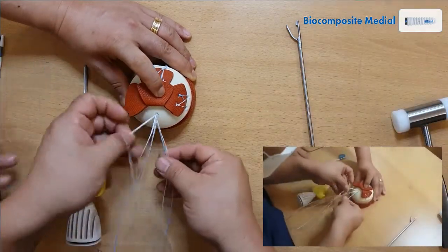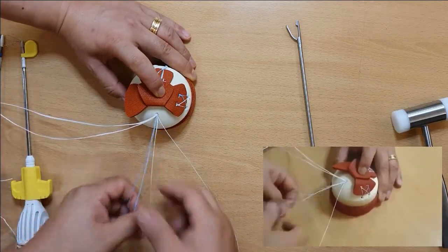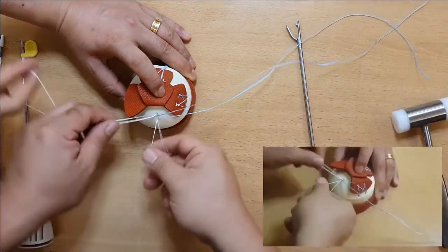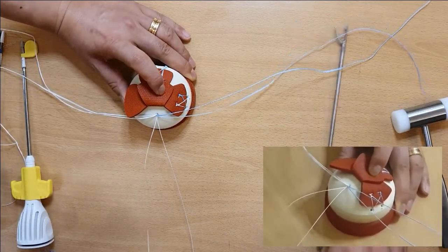Now we have two fiber wires, white and a blue one. And this is fiber tape and we have one fiber wire. I'm going to pass this fiber wire.